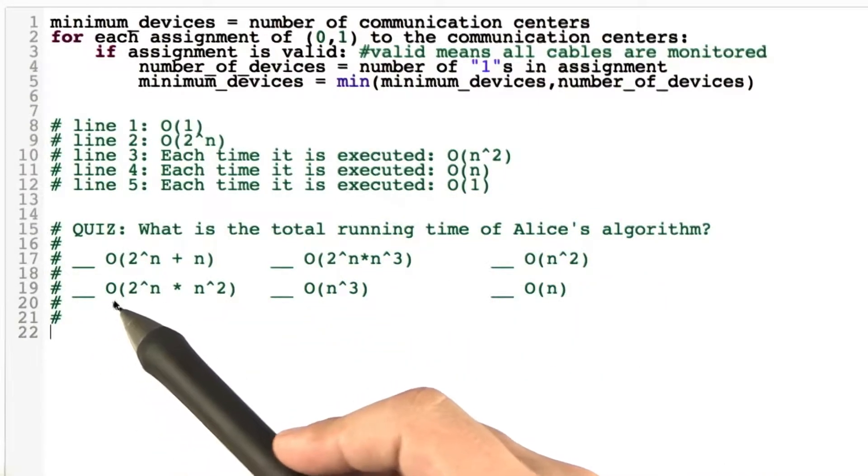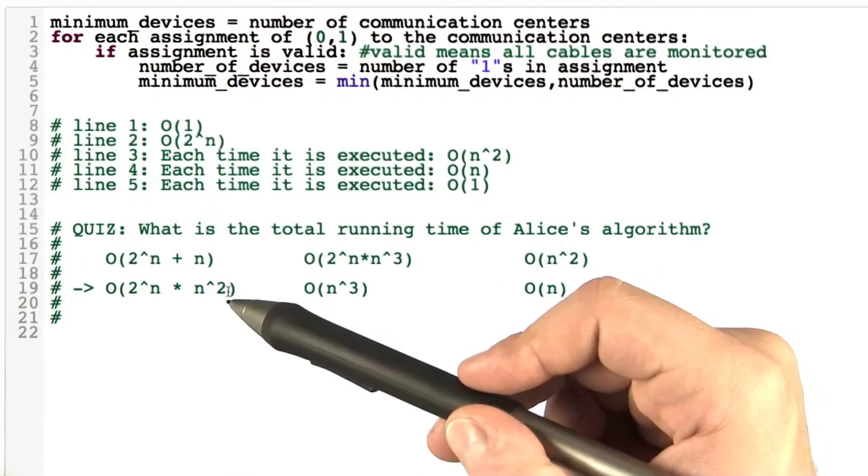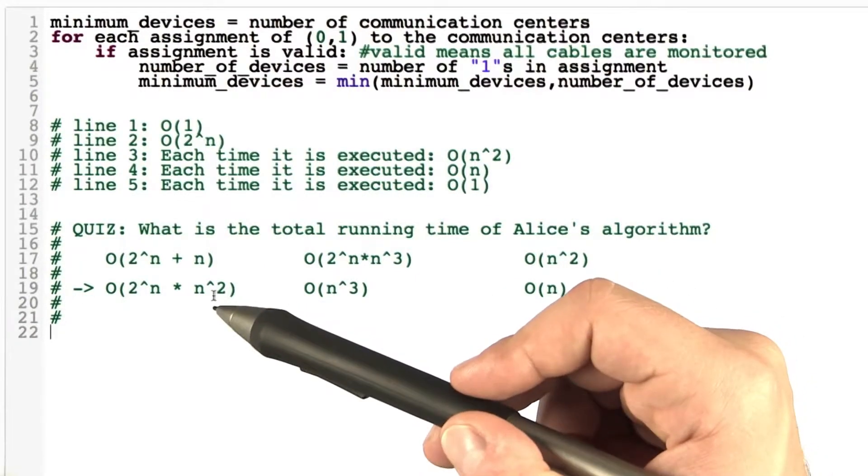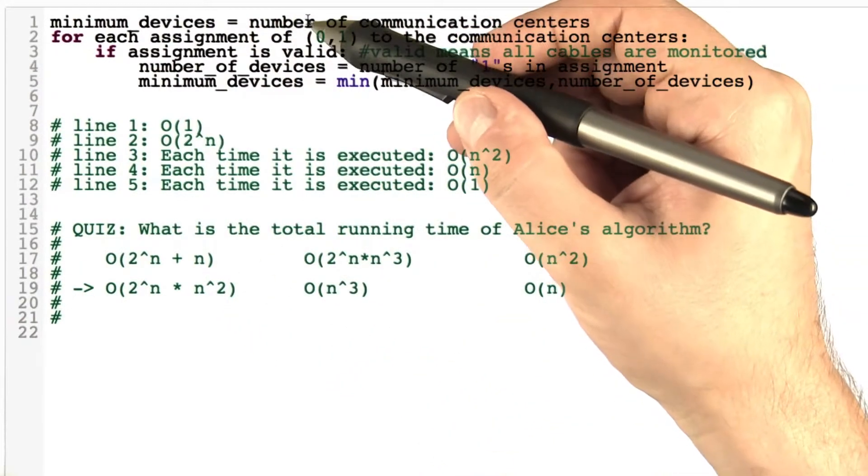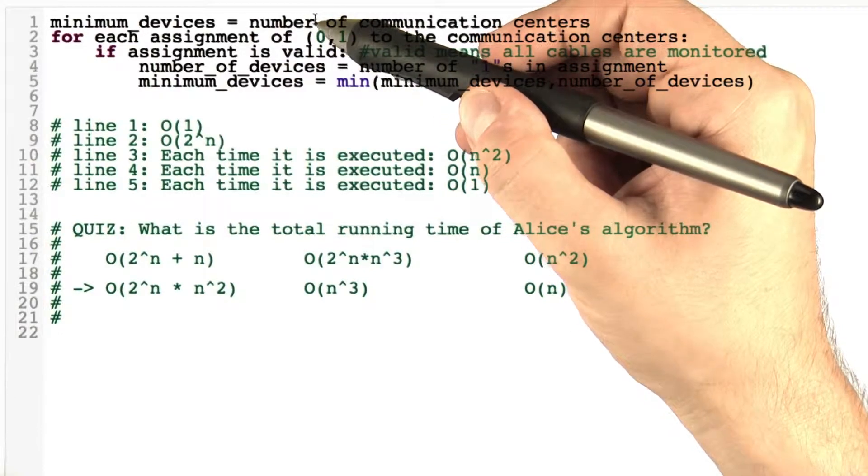And the correct answer here is O of 2 to the power of n times n squared. And the reason why this is correct is as follows.